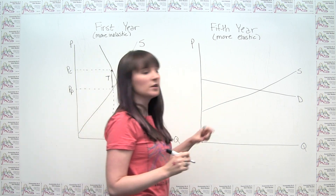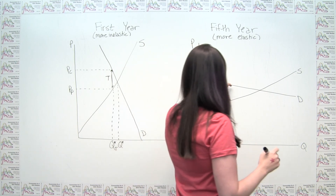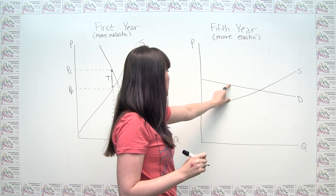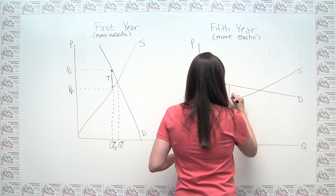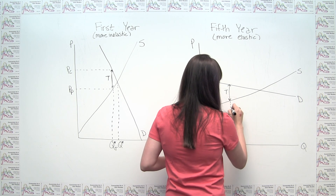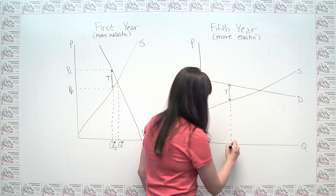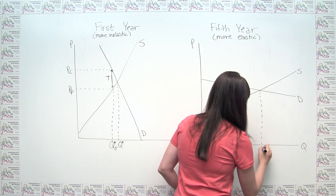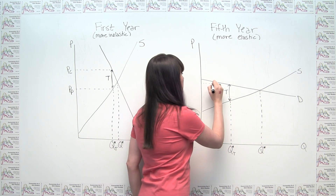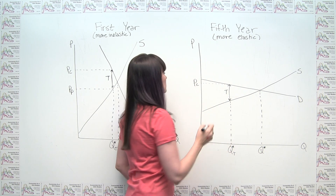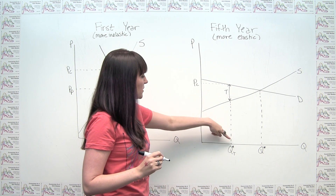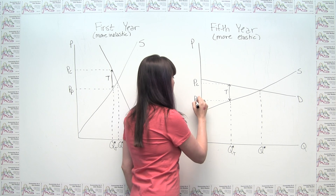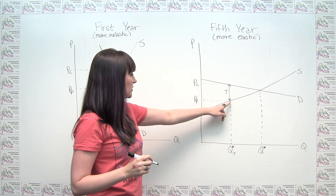We can do the same thing for the fifth-year market. Again, the tax creates a wedge between the supply price and demand price equal to the amount of the tax. This gives us our equilibrium quantity with the tax Q* sub T, our original free market equilibrium quantity, the consumer price inclusive of the tax given by the demand curve, and the producer price net of the tax P sub P given by the supply curve at that quantity.